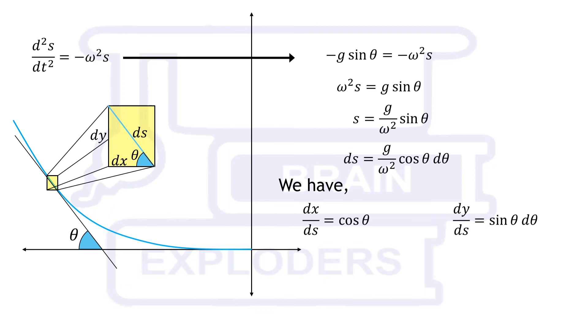From relation omega squared equals g sin theta, we find that at theta equals 0, s is equal to 0.